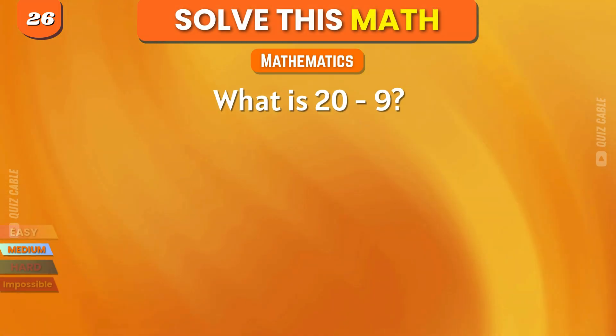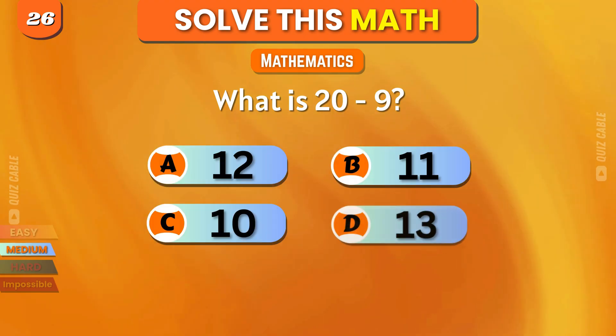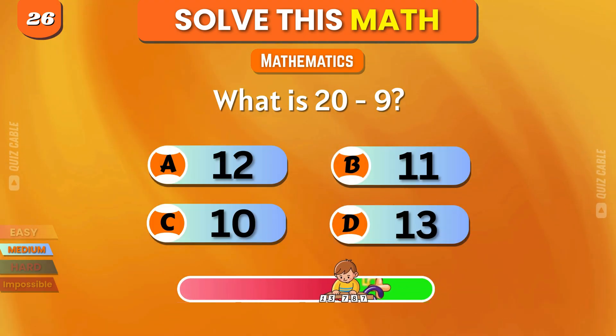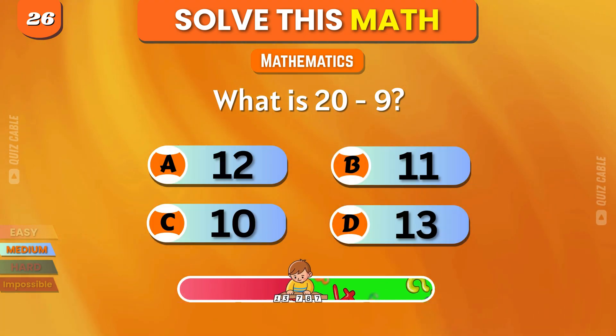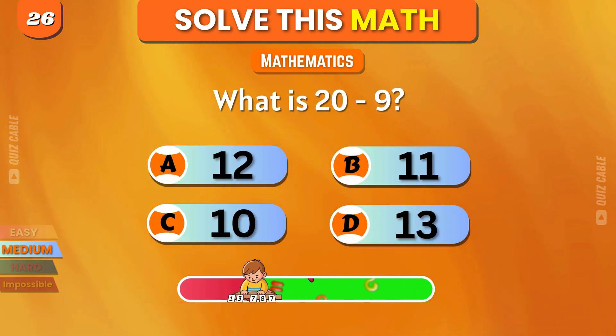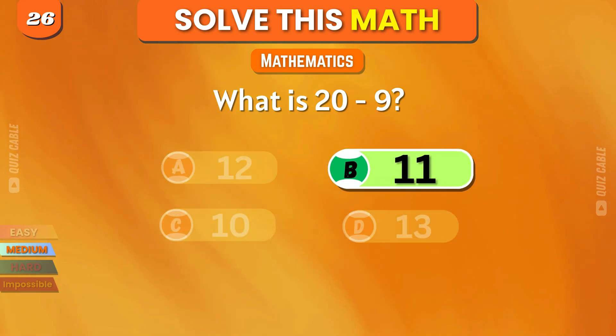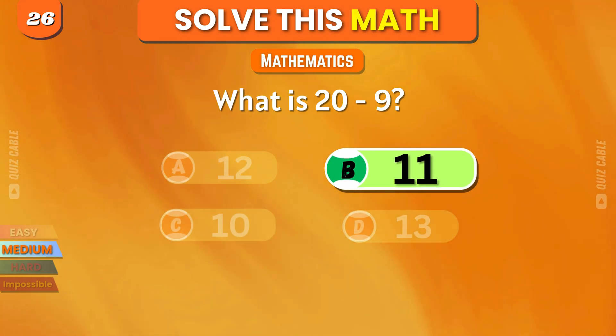What is 20 minus 9? 12, 11, 10, 13. Correct, 11.